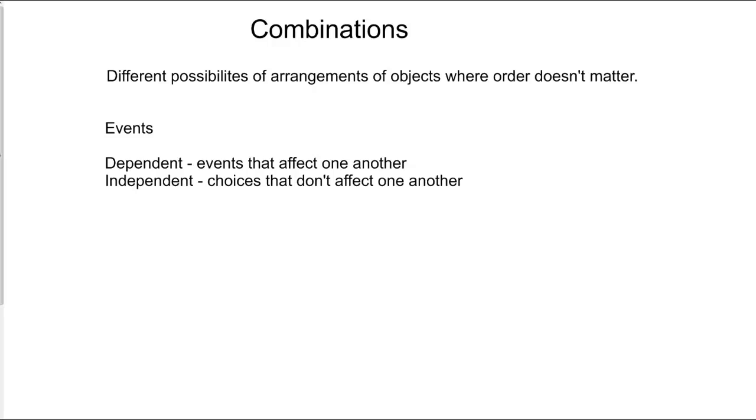When we talk about finding combinations, we talk about finding different possibilities of arrangements where order is not going to matter. When we talk about an event, we talk about something that's actually happening. There are two types of events: dependent events, where events that affect one another occur, and independent events, where choices that are made don't affect one another. We'll see that as we get further into our problems.